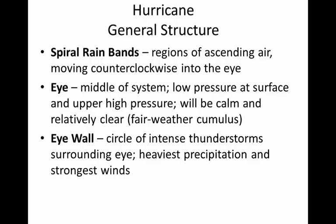The anatomy of a hurricane: from satellite images, you can see spiral arms packed with clouds, rain clouds, and thunderstorms. I think of them like an octopus's arms, with little thunderstorm cells. The center is the eye — and yes, it is calm in the center. Around the eye is the eye wall, with the most intense winds closest to the eye.